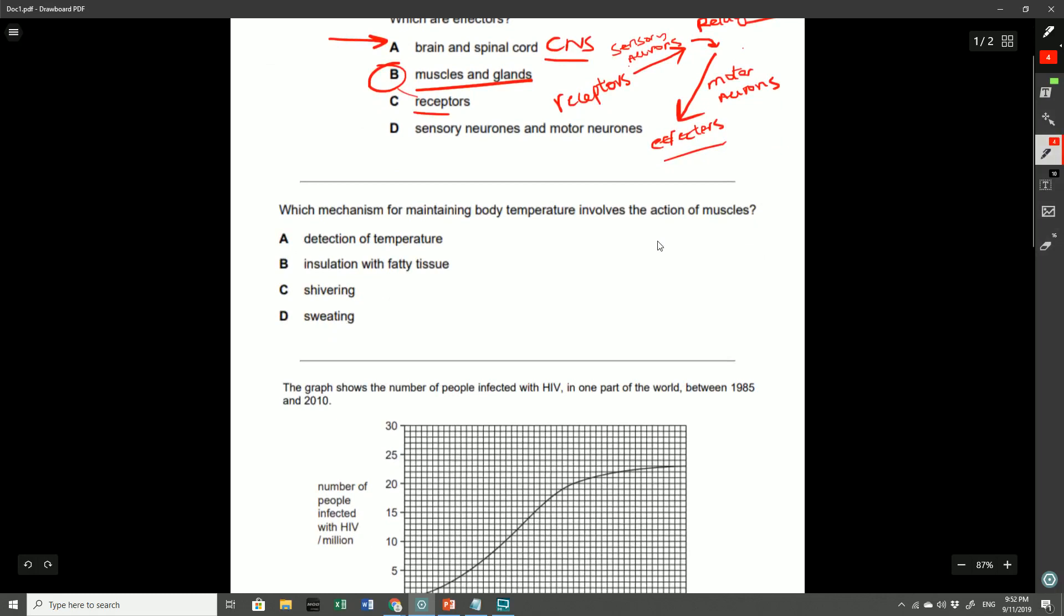Which mechanism for maintaining body temperature involves the action of muscles? The answer was C, because as we shiver, the muscles are respiring. Under really cold circumstances, because the muscles are respiring, they will produce heat, and that heat is going to warm us up. A lot of people actually incorrectly decided to go for option D, which was sweating. Sweating is indeed a way for us to maintain body temperature. When we're really hot, the sweat glands are going to produce sweat that's going to leak onto the skin.